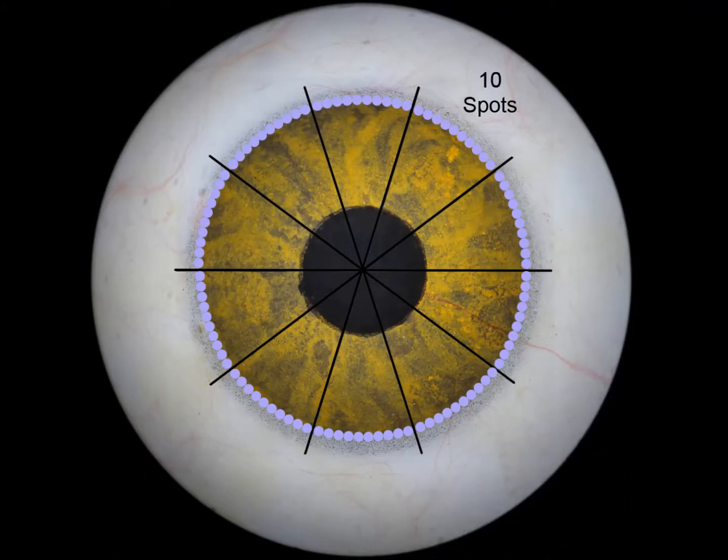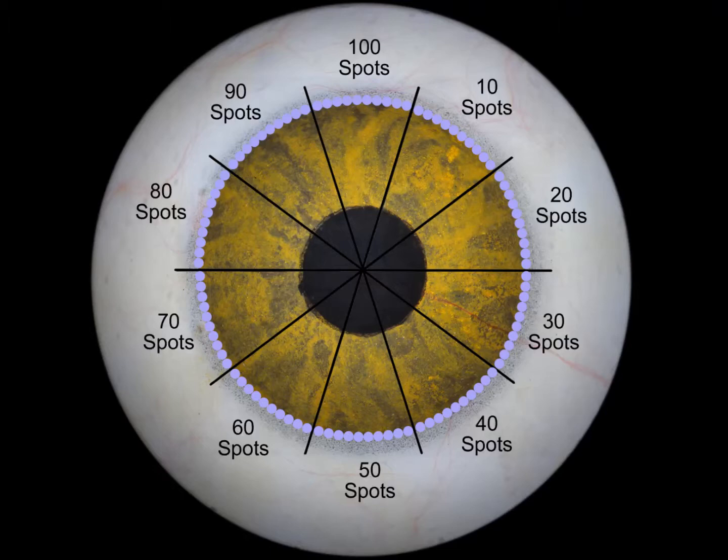Designed for the 400 micron spot of the SLT laser, the internal reference figure guides 10 sub-threshold laser spots. The rotating lens ring indexes each 36 degrees for 100 laser spots per revolution of the lens.